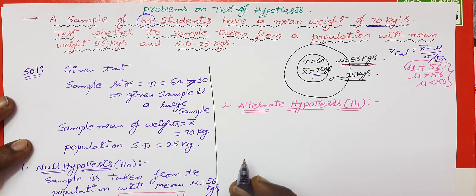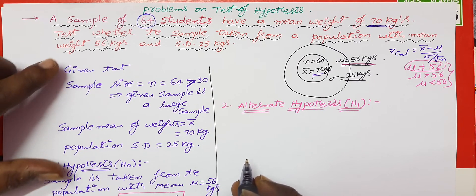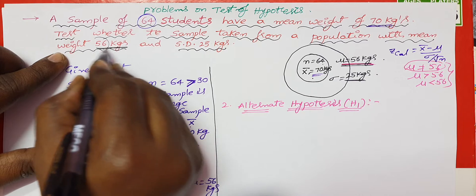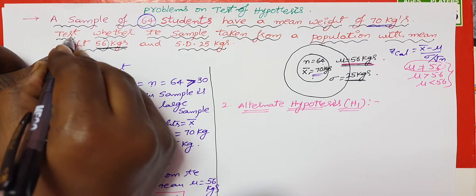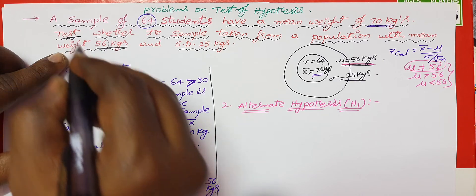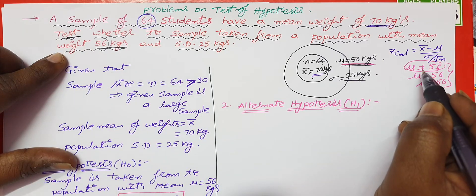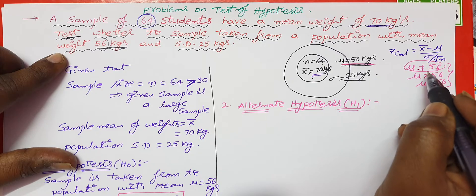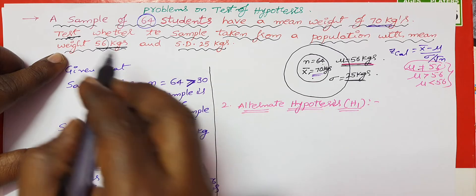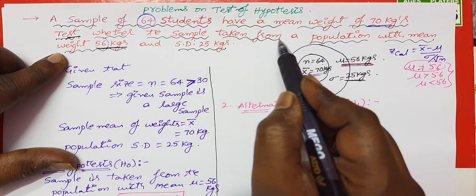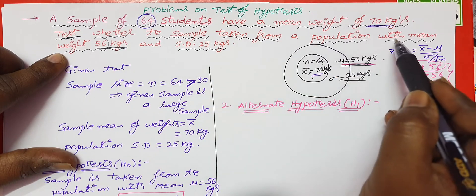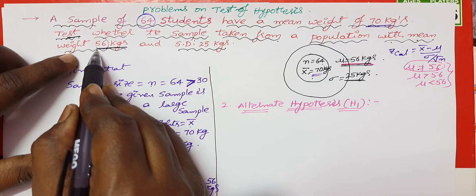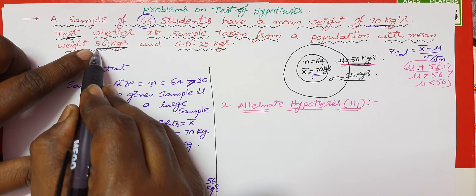In the problem statement, we will test the population mean weight of 56 kgs. The problem says 'test whether the sample is taken from a population with mean weight' — so H1 is mu not equal to 56.